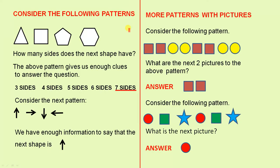Consider the following patterns. How many sides does the next shape have? So we have three sides, four sides, five sides, six sides. So the above pattern gives us enough clues to answer the question. Three sides, four sides, five sides, six sides. So the next one has seven sides.